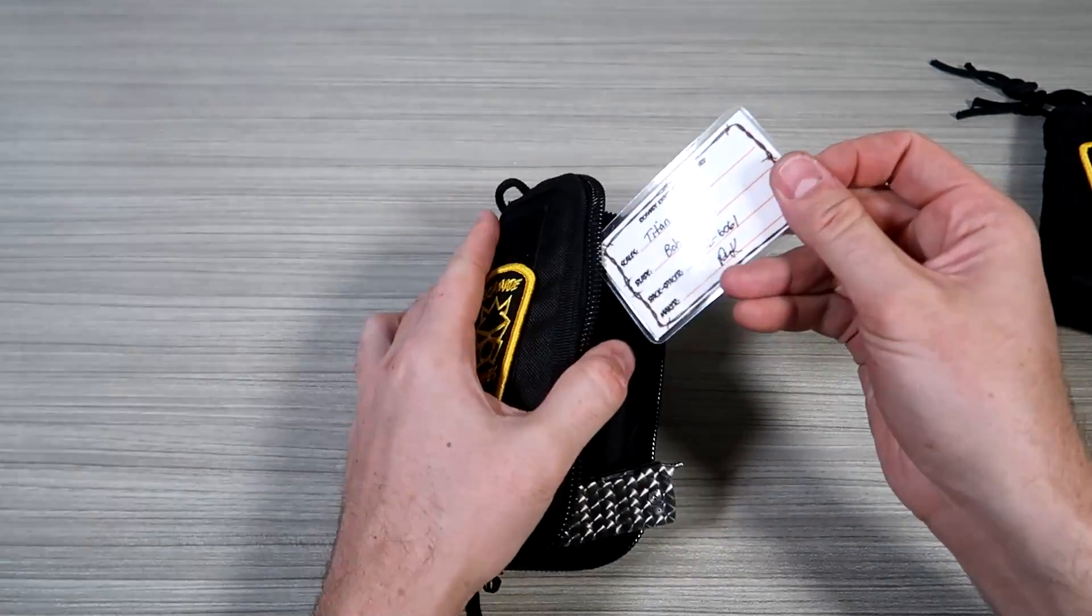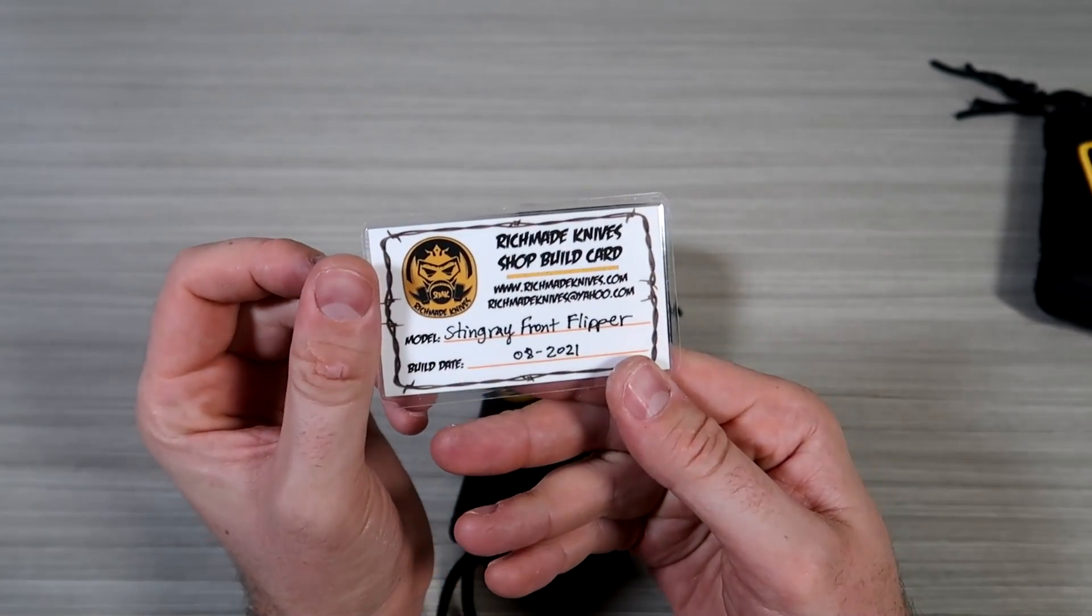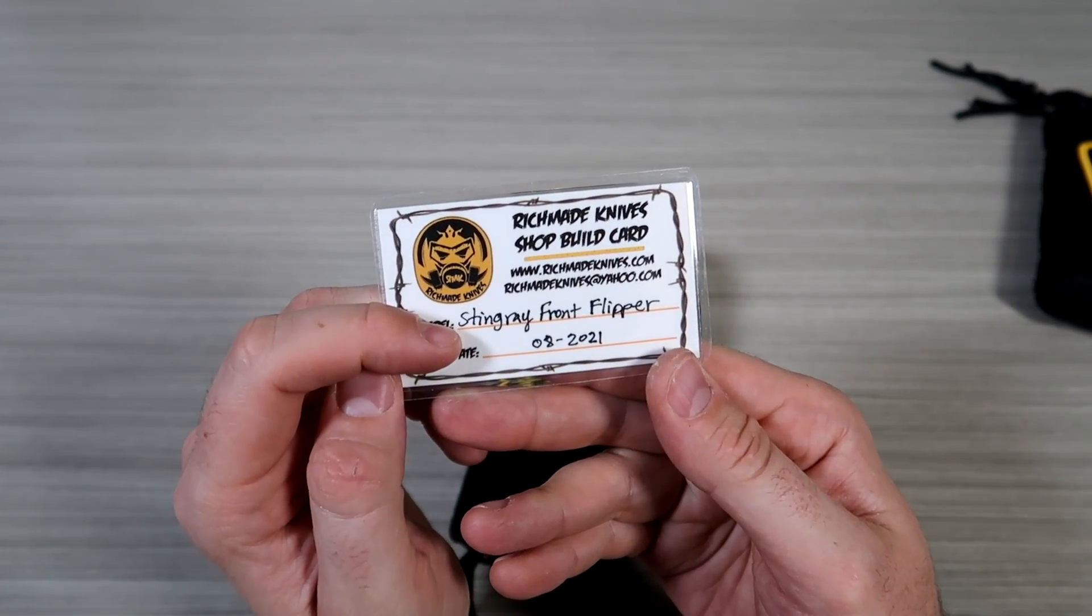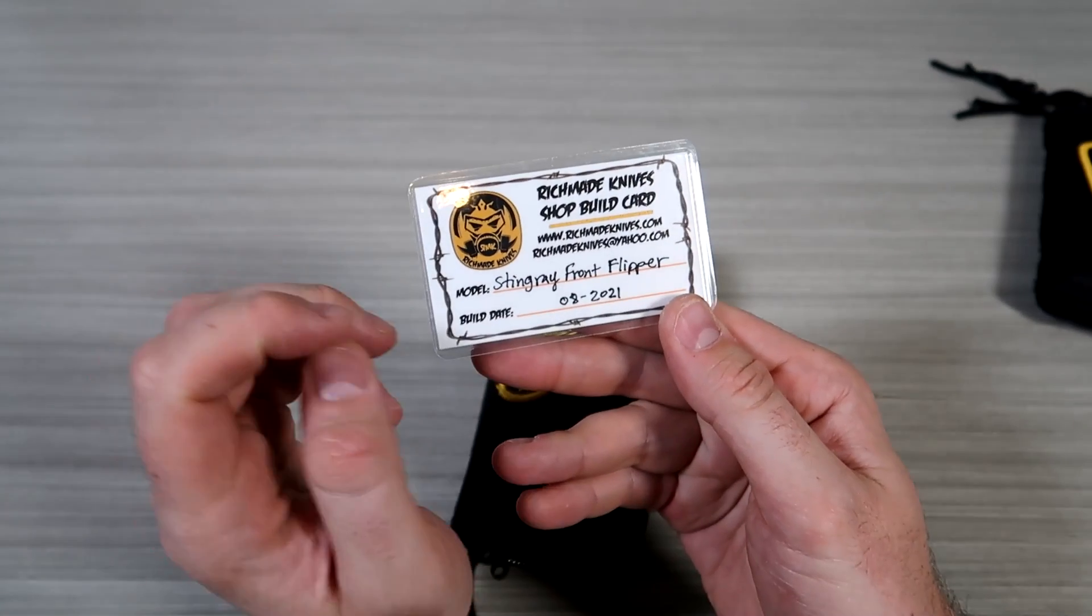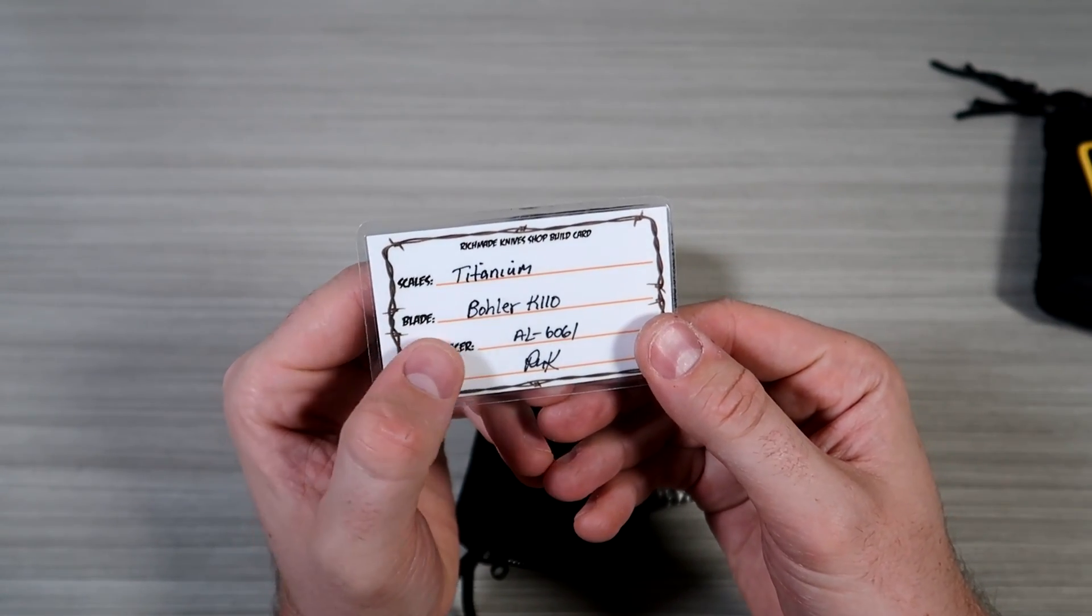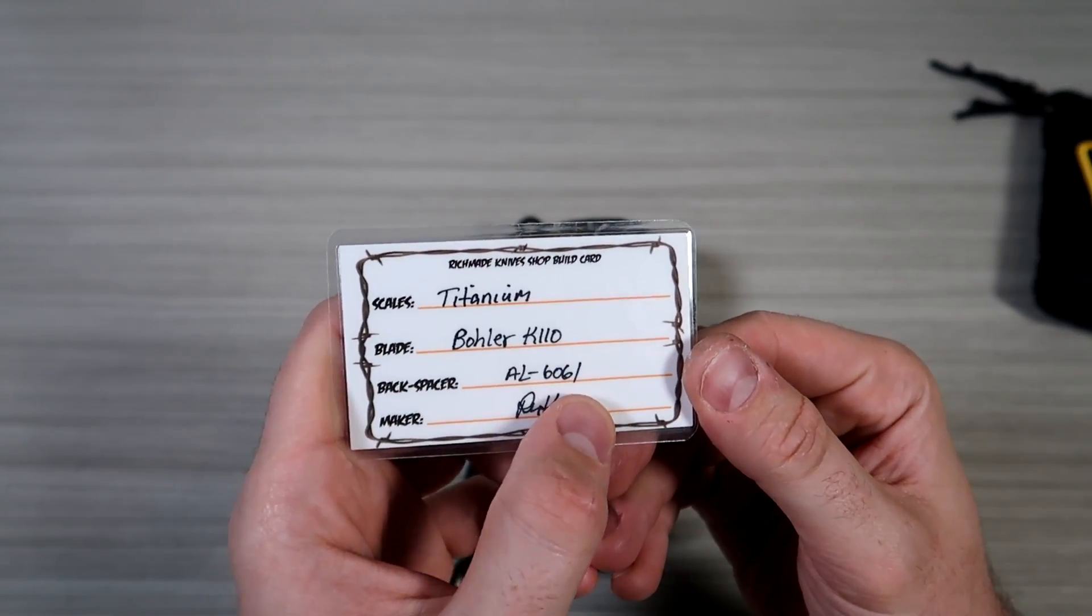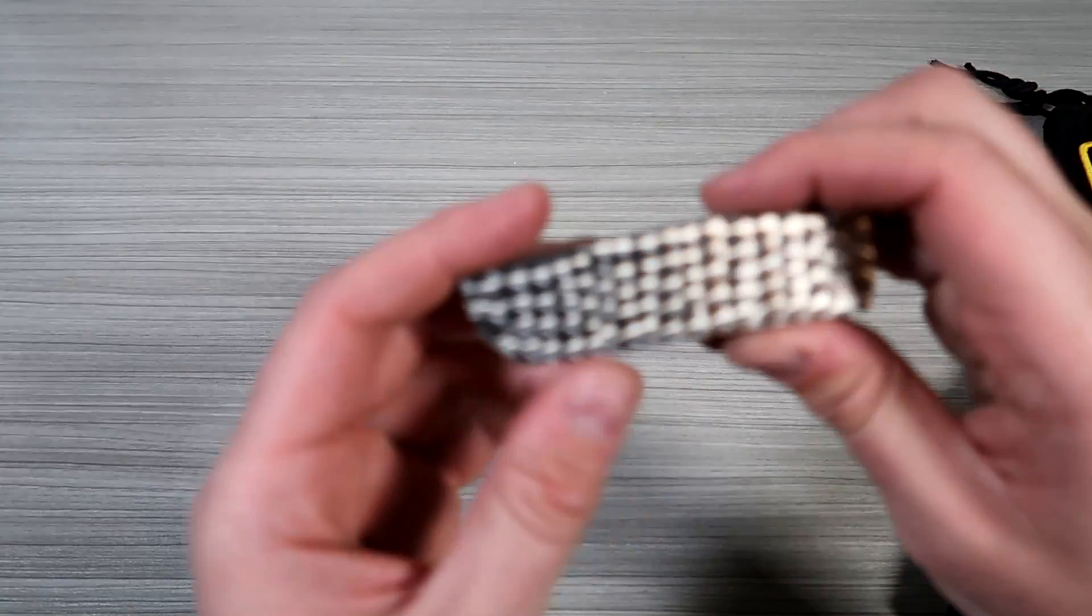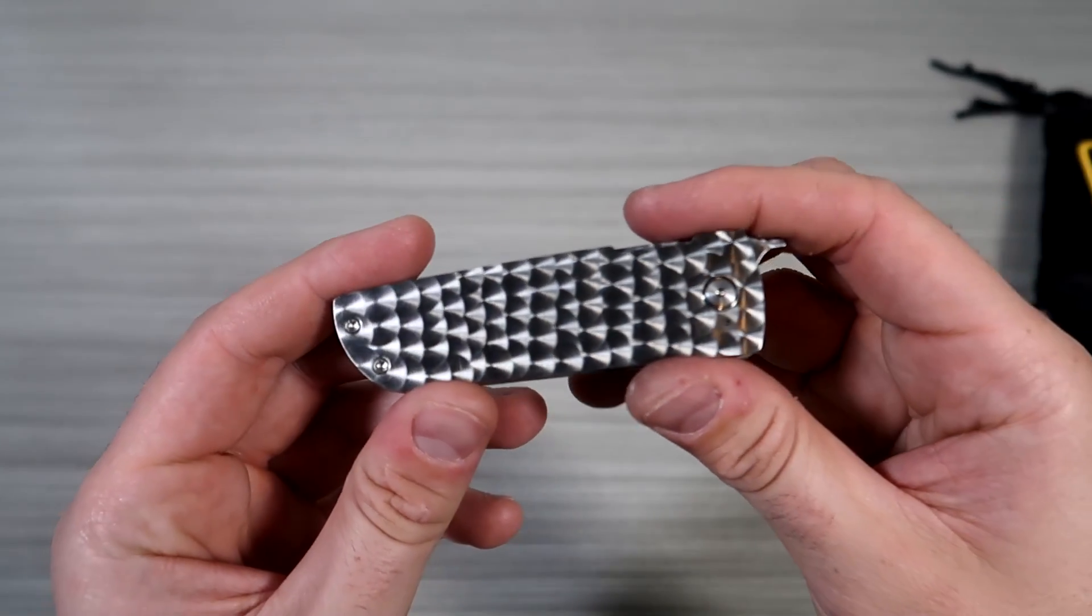So first of all, there's a certificate of authenticity. Stenray front flipper. This one was made in 2021. Titanium blade, this is the name of the steel I guess. Wow look at that looks like a fish scale.